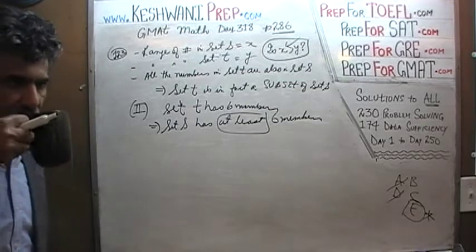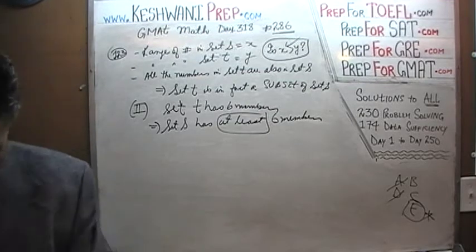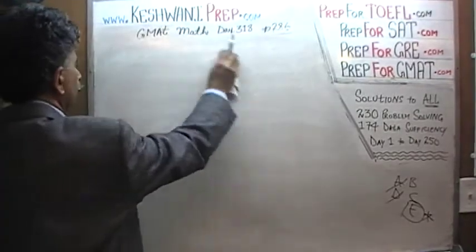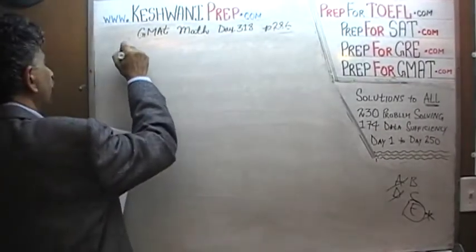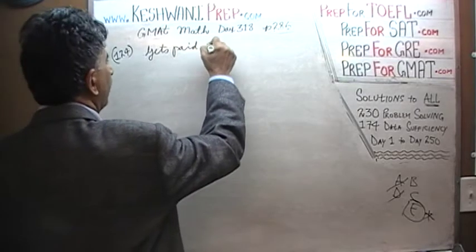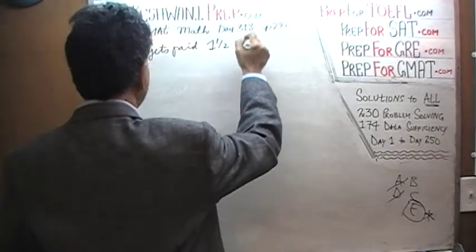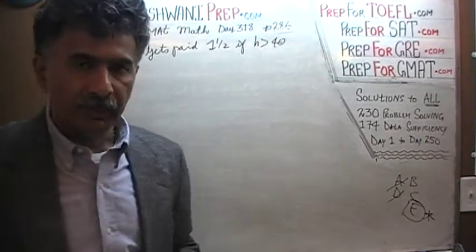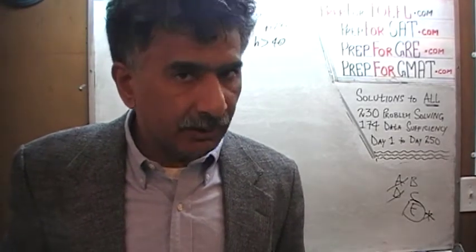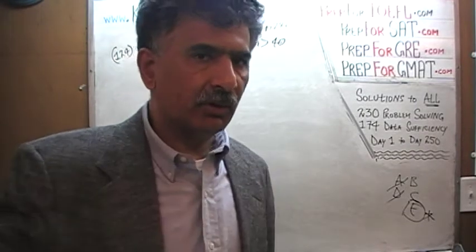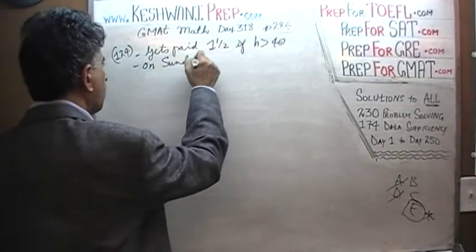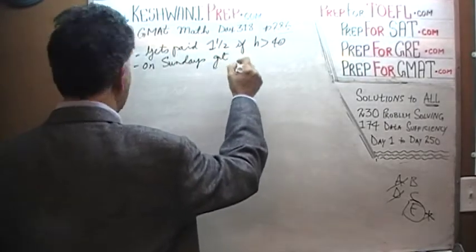Next problem: number 124. In problem 124, we are told that he gets paid time and a half if the number of hours worked in a given week is more than forty. So if he works more than forty hours, he gets time and a half for any hours over forty — which is pretty standard practice. We are also told that on Sundays he gets paid double time.